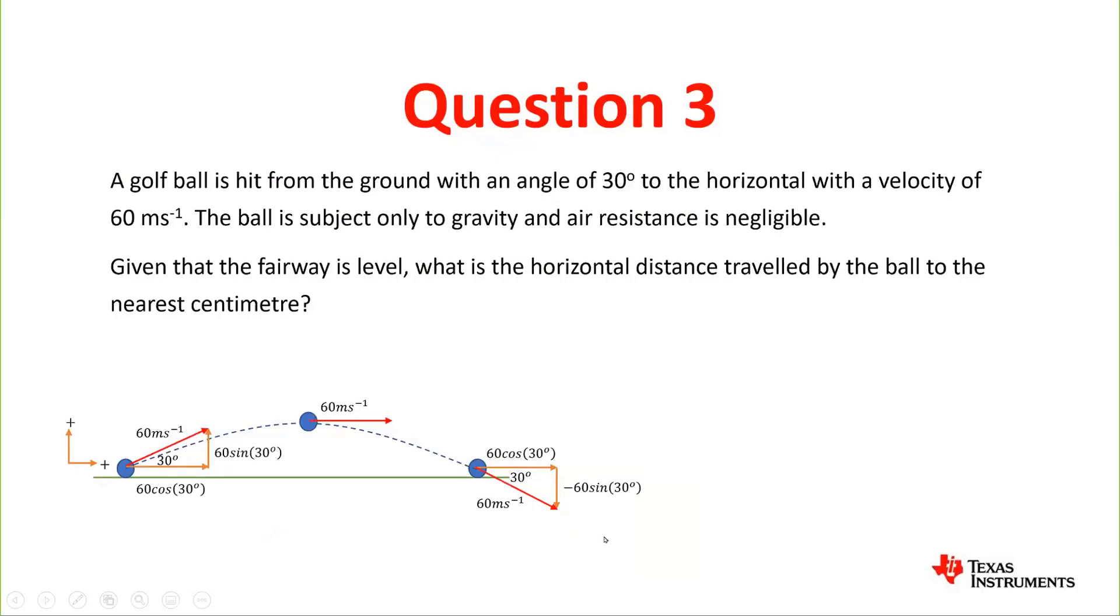We then have to see what equations we're going to use, so stage one is the vertical motion. We see that our final velocity will be negative at -30. We have our initial velocity at 60sin(30°) which is also 30, time is what we want to find, and the acceleration is -9.8 meters per second. The equation we're going to use is v = u + at.